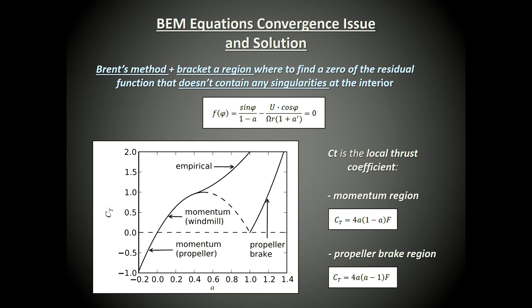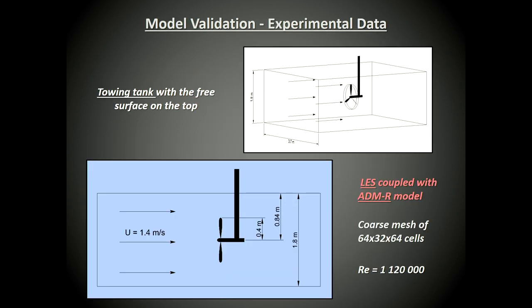After we solved the problem of convergence, we validated the model with the experimental data. The test was carried out in a tow tank with a free surface on top and the turbine submerged in the fluid. We performed large eddy simulation coupled with the actuator disk model with rotation and also without rotation, at high Reynolds number with a coarse grid, and compared the results with the experimental data.